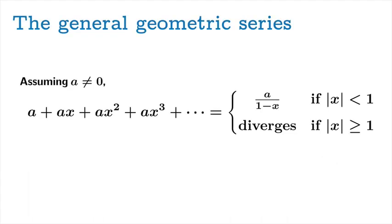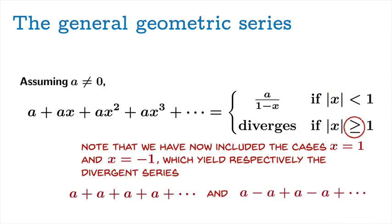Assuming a is not equal to 0, here's our result. We've now included the trivial cases x equals 1 and x equals negative 1. These cases yield respectively the divergent series a plus a plus a and a minus a plus a minus a. The first of these diverges to positive or negative infinity depending on whether a is positive or negative. The second series has a sequence of partial sums that alternates between a and 0, so that will clearly diverge. Both of these cases should be included in the divergent case, and that's why the formula has been amended to say that the series diverges if the absolute value of x is greater than or equal to 1.